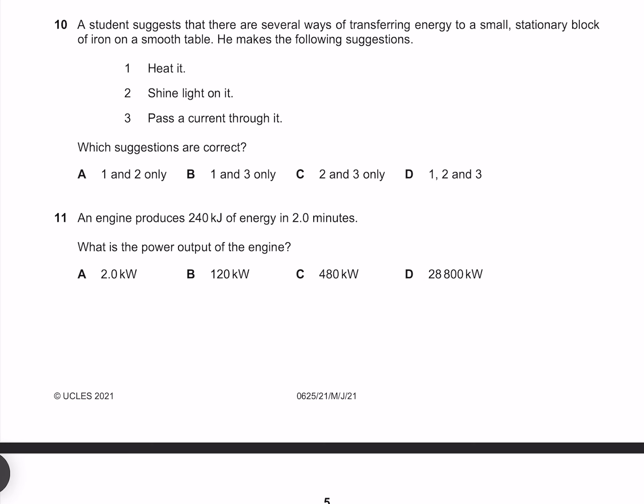A student suggests that there are several ways of transferring energy to a small stationary block of iron on a smooth table. He makes the following suggestions. Heat it, which will indeed give it thermal energy. Shine a light on it, which will do the same. And pass a current through it, which will likewise heat it up. All of these will transfer energy, therefore our answer must be D.